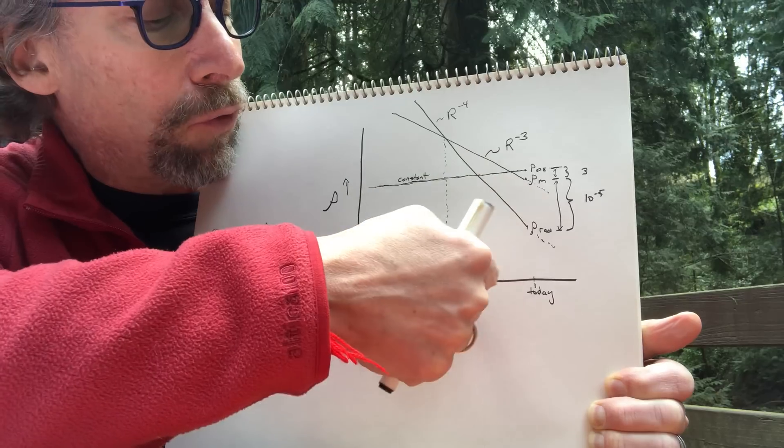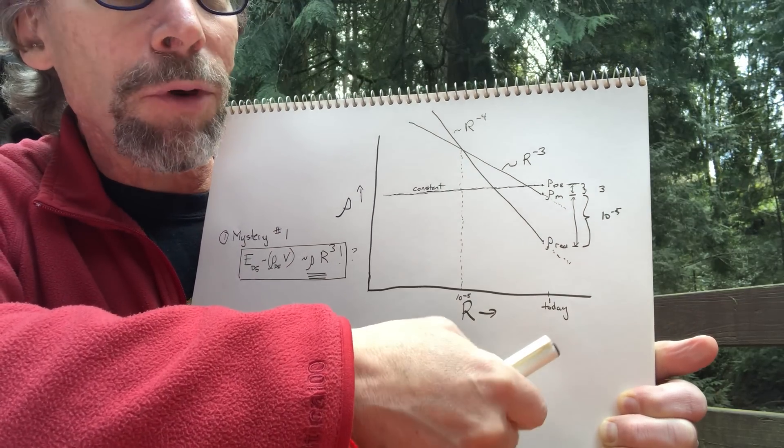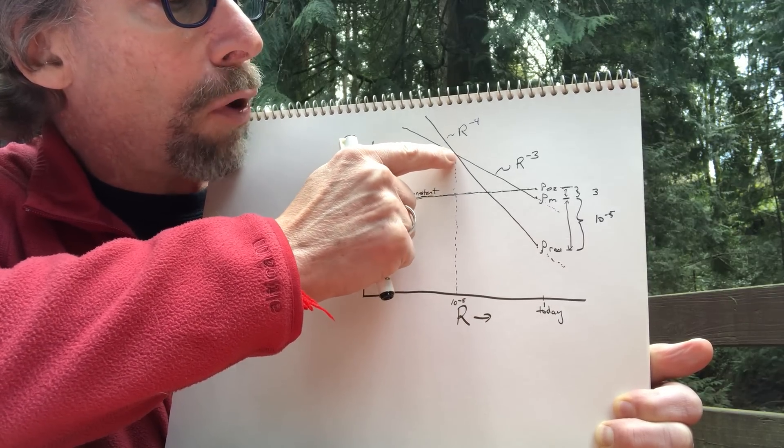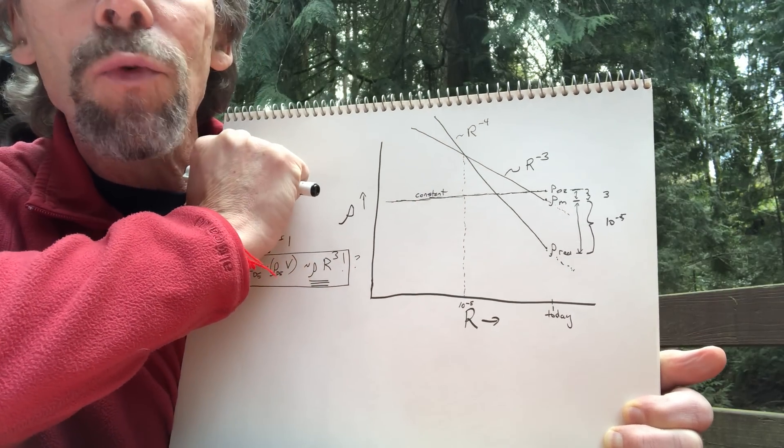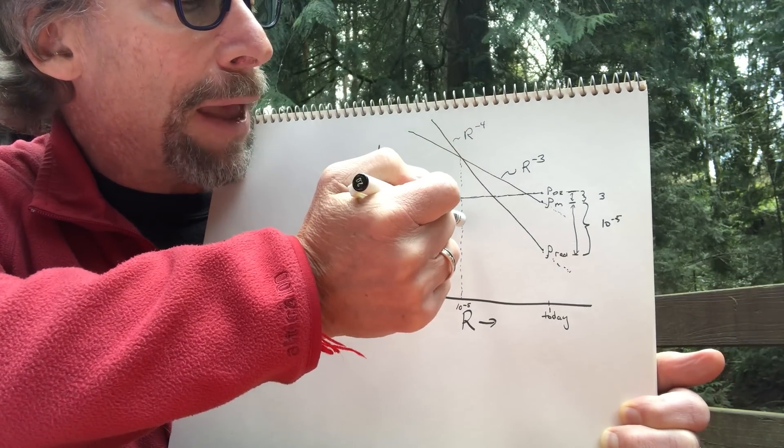And if you work backwards, when the universe was 1/100,000th its current size, about the time it was somewhere between 100 and 1,000 years old, those two crossed. And for all times before that, radiation dominated the energy density of the universe. And that's why we have a hot early Big Bang.